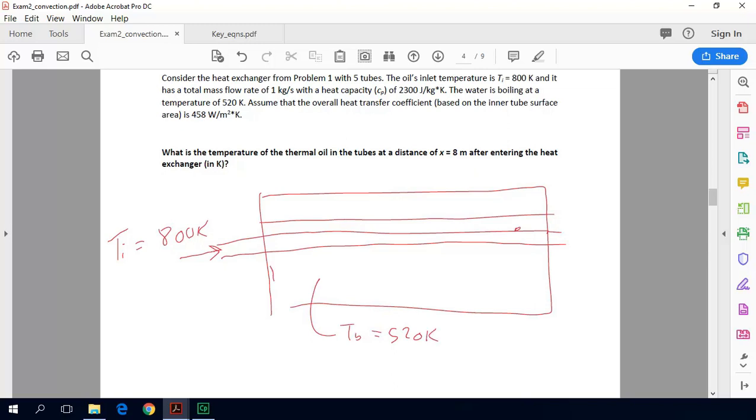And that is at 520 Kelvin. And then the total length of these tubes is 20 meters. But really, I'm asking what the temperature is at X equals 8 meters. So really we're just going to look at here, X equals 8 meters. So we want to see how much this temperature of the oil changes by the time it gets to here.